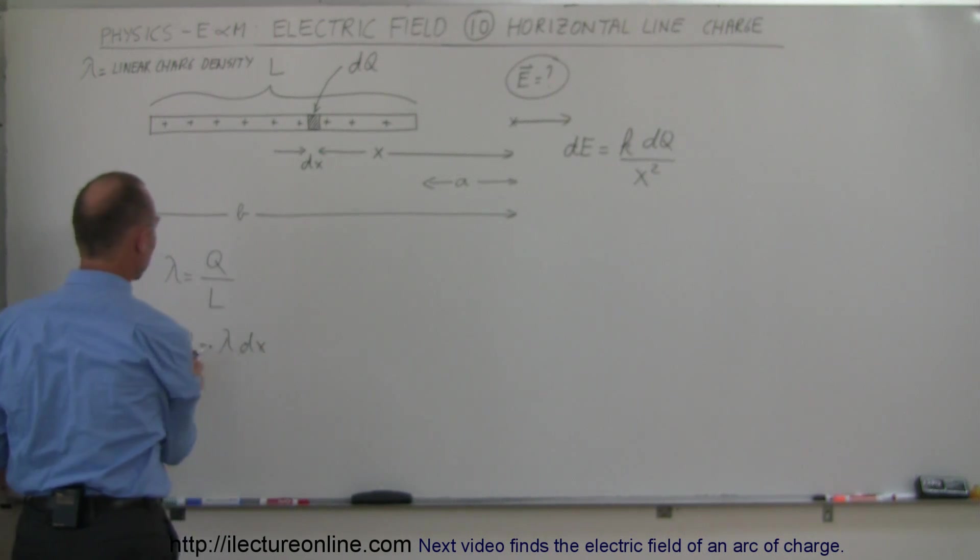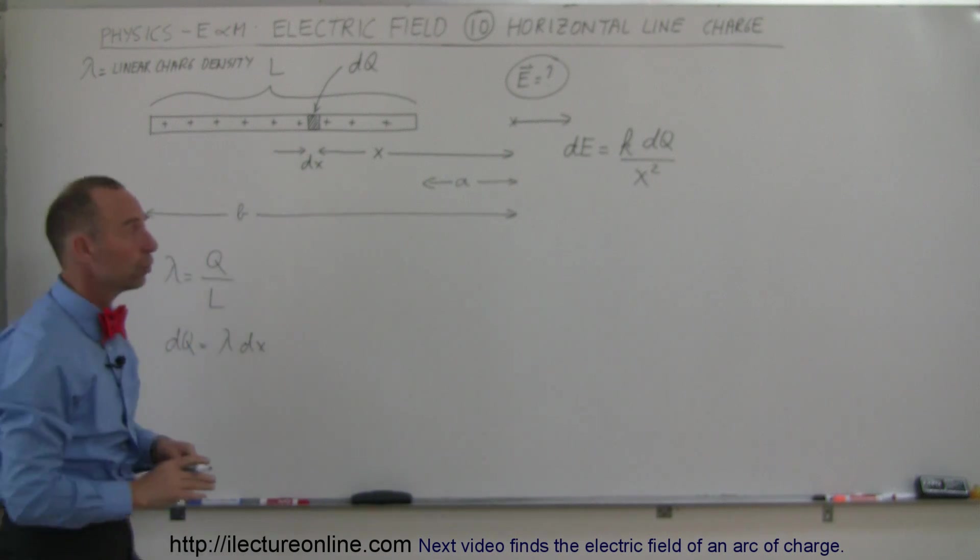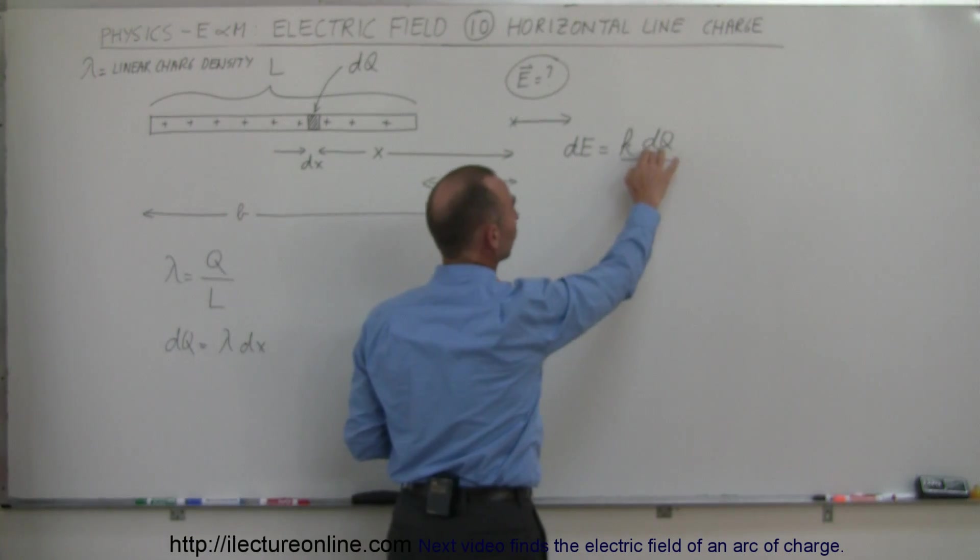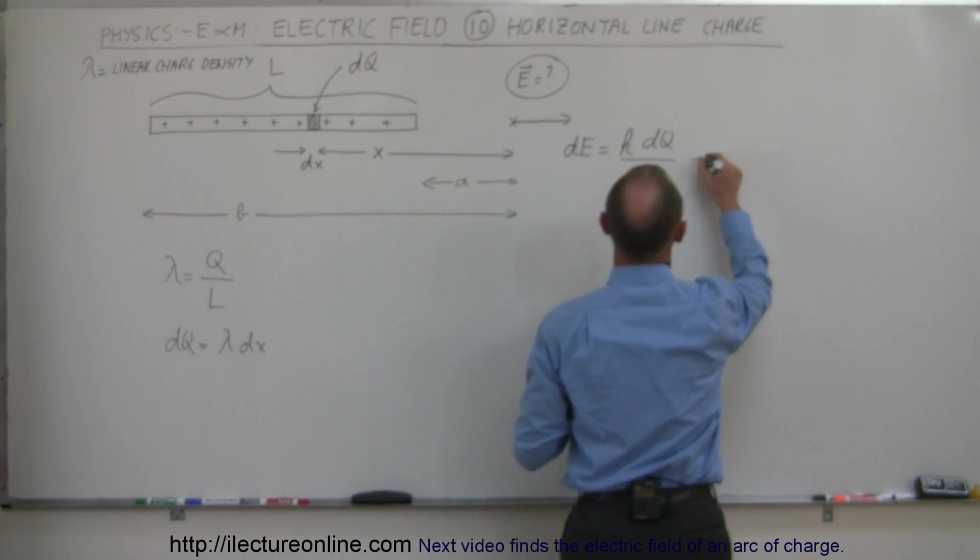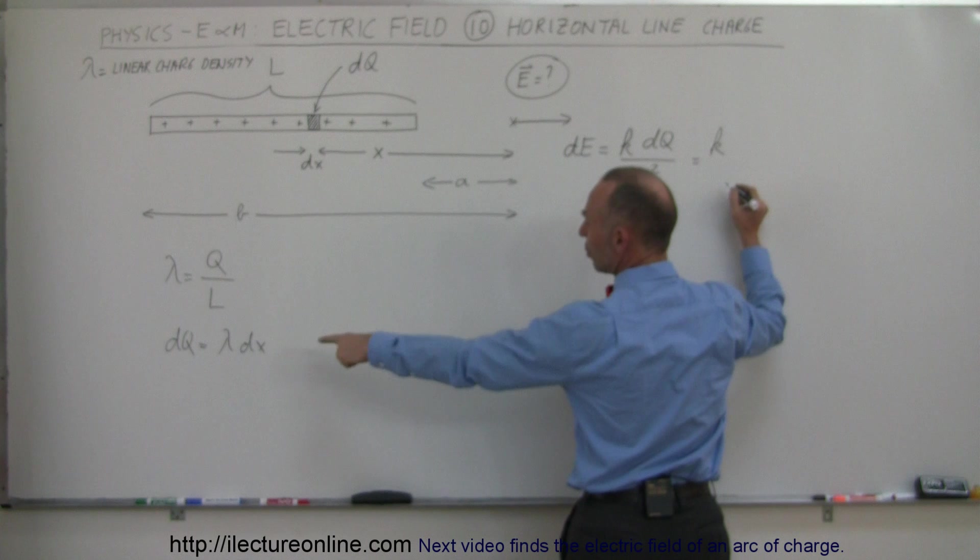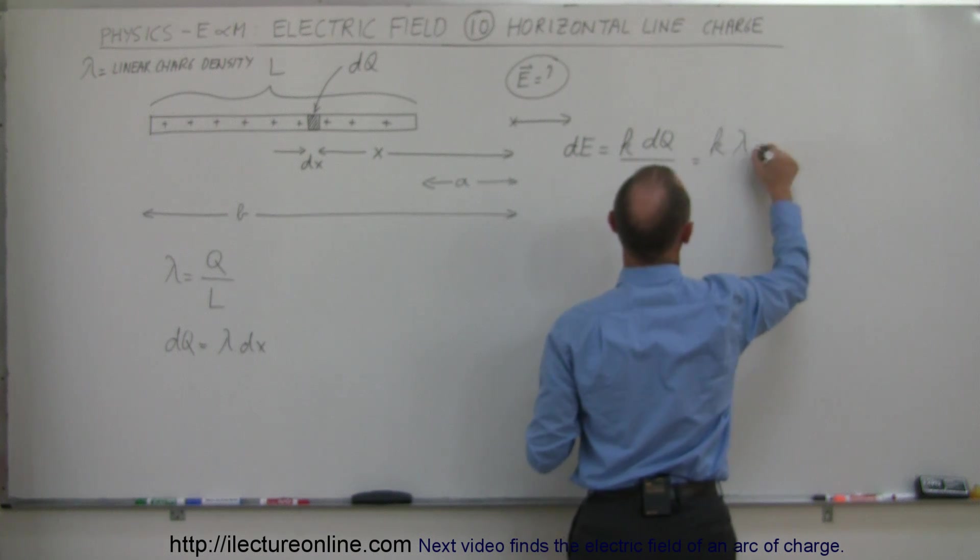So we could replace DQ by lambda DX, which is probably what we want to do, because we want to make sure that the differential matches the variable in the equation. So in this case, we're going to write, this is equal to K, and instead of DQ, we're going to write the linear charge density times DX, divided by X squared.